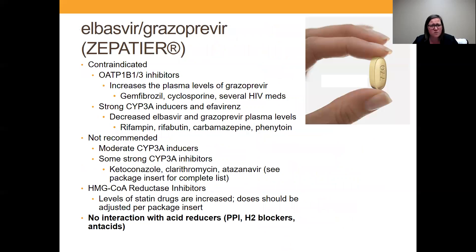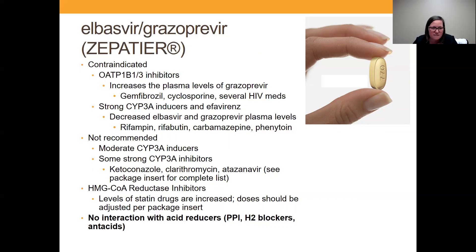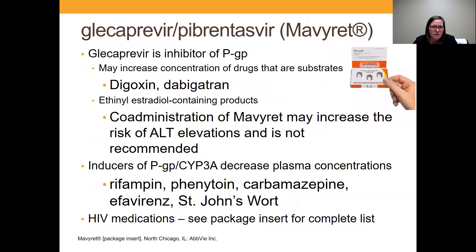Zepatir is another one we talked about last week. There aren't any interactions with those acid reducers we talked about in the last slide. And then glecaprevir/pibrentasvir, which is Mavyret, is the other big one — it has some of those same interactions like with digoxin, and also has an interaction with dabigatran.